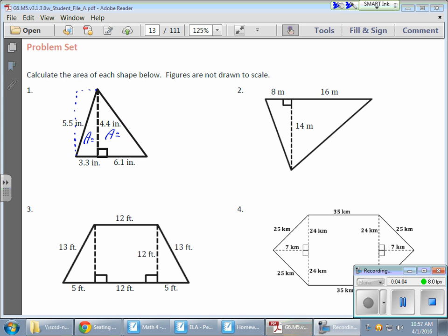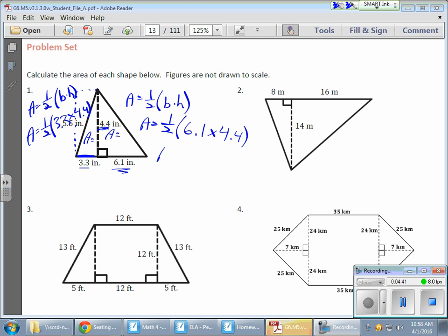Whichever method you like is fine. So over here if I have one-half my base times the height, and over here I have my one-half my base times the height. Here's my base right here, so I have my one-half times 3.3 times my height, which is 4.4. And on this side, very similar - here's my one-half except here's my 6.1 as my base times my 4.4 height.